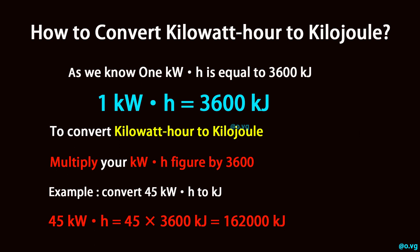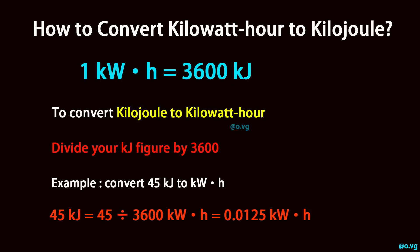Example: convert 45 kilowatt-hour to kilojoule. 45 kilowatt-hour is equal to 45 times 3600 kilojoule, which equals 162,000 kilojoule.